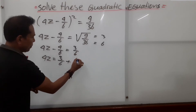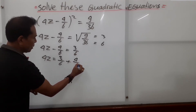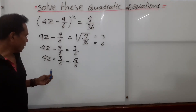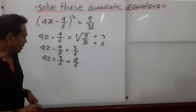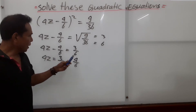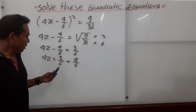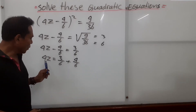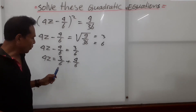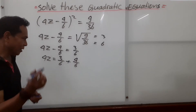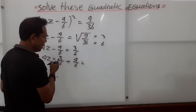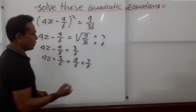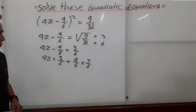The denominators are the same — both are 6 — so we can just add straight away. So 4z equals 3 over 6 plus 4 over 6. That gives us 3 plus 4, which is 7 over 6.